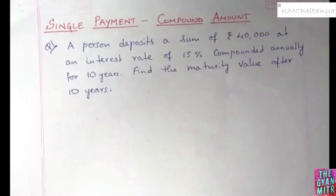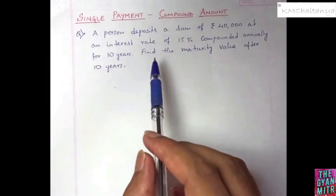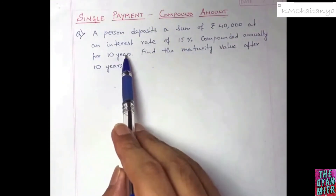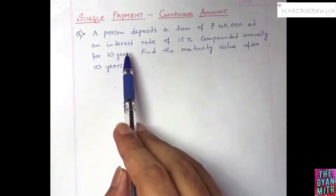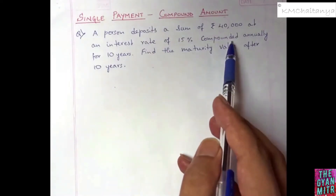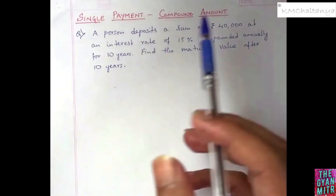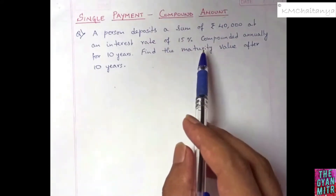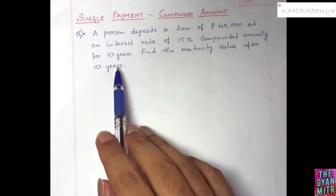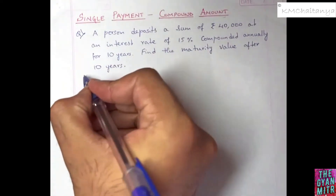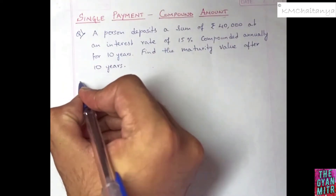A person is depositing 40,000 rupees in a bank for 10 years, and the bank is giving an interest rate of 15% compounded annually. We are supposed to determine how much the person is going to get after 10 years.